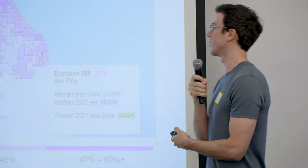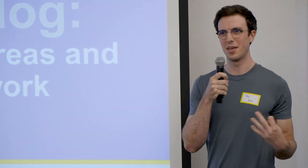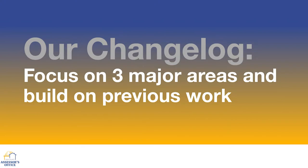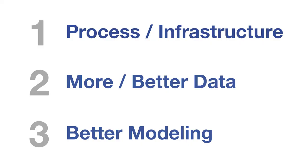So that's what we did — those are our results, we've improved a lot. Now I want to talk about what we did to get there. Going to present a sort of changelog with a focus on three major areas that we worked on, including process, infrastructure, data, and then modeling itself.